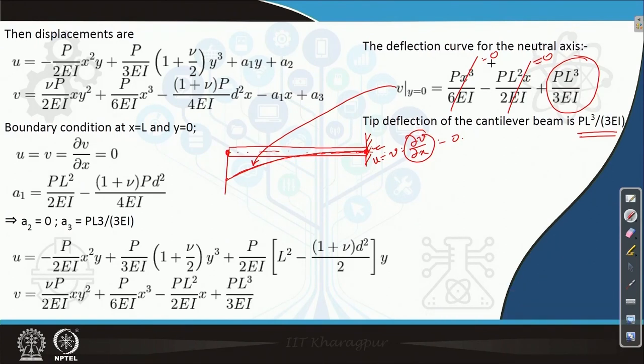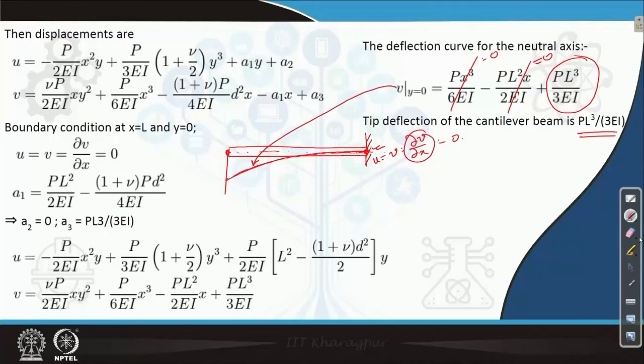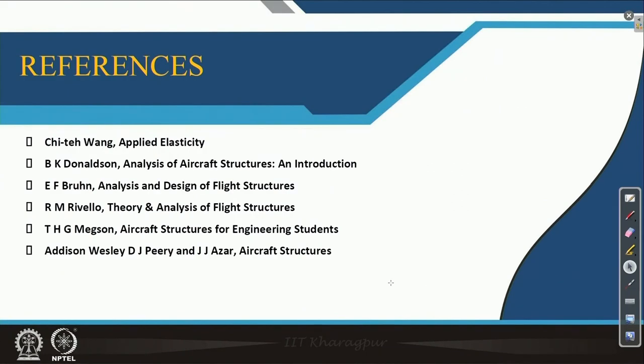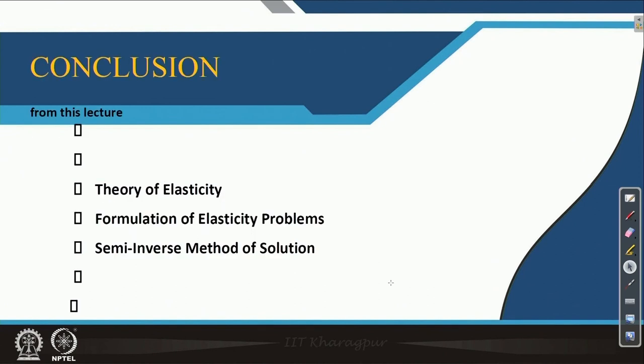With this, the preliminary discussion of theory of elasticity ends. In the next two weeks we will solve specific problems using theory of elasticity and see how it gives insight into certain problems. We have come to the end of today's lecture. In conclusion, we learned the semi-inverse method of solution using the example of a cantilever beam. Thank you all for attending the course.